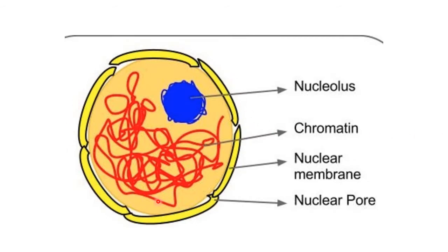Here is an elaborated diagram. You can see the chromatin, and the chromatin joins together to form a structure called chromosomes. Chromosomes contain a gene, and this gene is transferred from the parents to the offspring. The nuclear membrane protects the nucleus and separates it from the cytoplasm. The nuclear pore allows the inward and outward movement of particles.